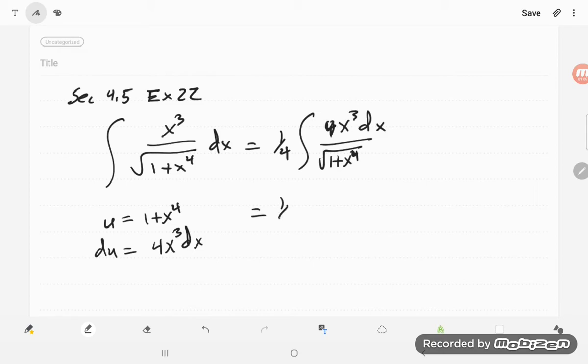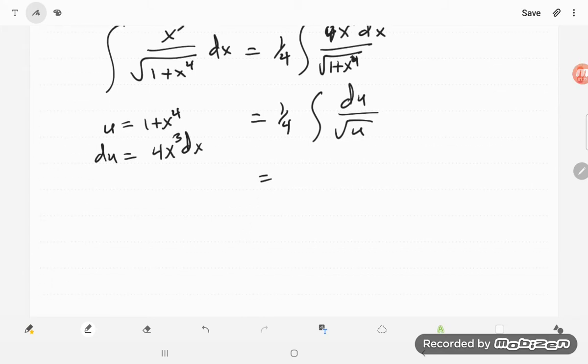so now making my substitutions, I have 1 fourth the antiderivative of du over the square root of u. To do this, I'll first write that 1 over the square root of u is u to the negative 1 half du,